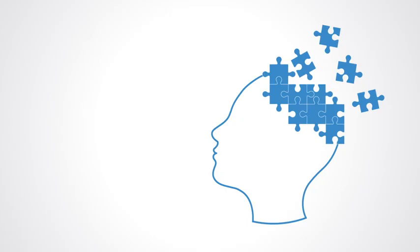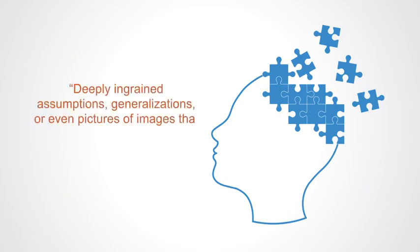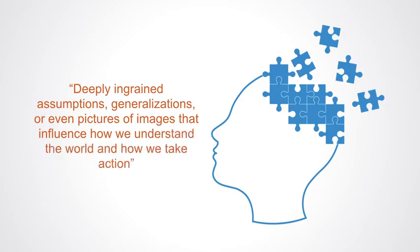As Peter Senge's book The Fifth Discipline notes, mental models are deeply ingrained assumptions, generalizations, or even pictures of images that influence how we understand the world and how we take action.